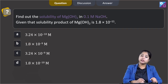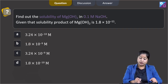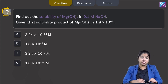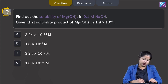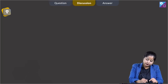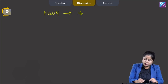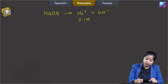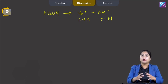Next question: find the solubility of magnesium hydroxide in 0.1 molar NaOH. The solubility product of magnesium hydroxide is 1.8 × 10⁻¹¹. The options are: 3.24 × 10⁻¹⁰ M, 1.8 × 10⁻⁹ M, 3.24 × 10⁻⁹ M, or 1.8 × 10⁻¹⁰ M. NaOH completely dissociates into Na⁺ and OH⁻, so the concentration of OH⁻ from NaOH is 0.1 molar.